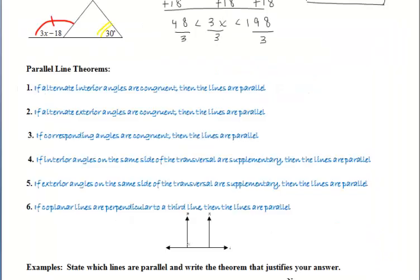Now let's talk about theorem 6. It states that if coplanar lines are perpendicular to a third line, then the lines are parallel. So let's say we have those two lines, M and N, that are each perpendicular to this yellow line L. That then means that lines M and N are parallel to each other.